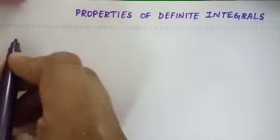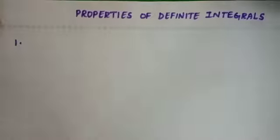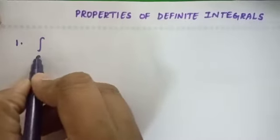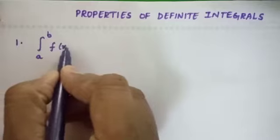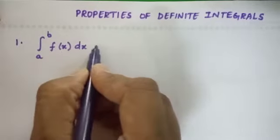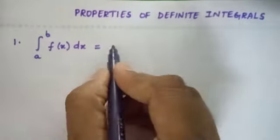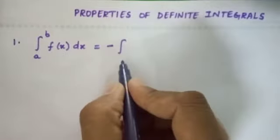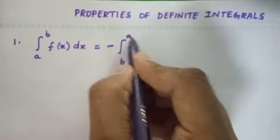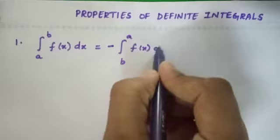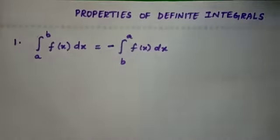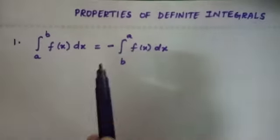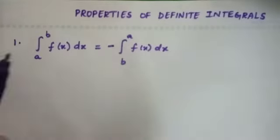The first property is: the integral over a to b of f(x) dx is the same as the negative of the integral over b to a of f(x) dx. So when the upper limit and lower limit are exchanged, we get a negative sign. This is the first property.